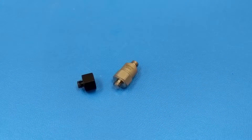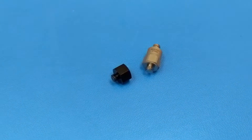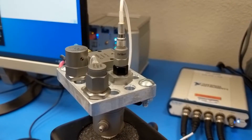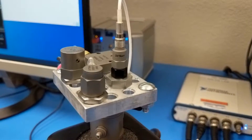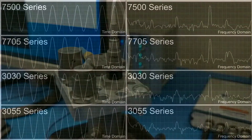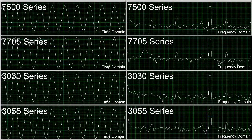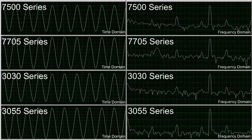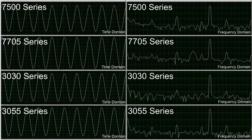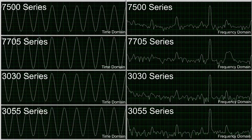DITRAN offers a variety of isolation bases that can be used to isolate case grounded sensors from the test article. Let's install one of these bases on the 3030 series sensor and observe the effects. With the isolation base installed on the 3030 series sensor, we can no longer observe the effect of the ground loop, and we have successfully preserved the integrity of our vibration data.